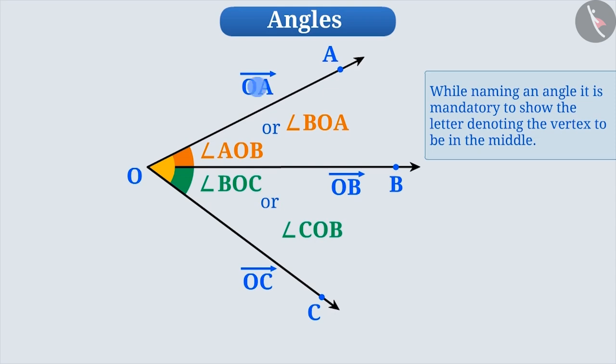Now, can you say what name will be given to the angle formed between rays OA and OC? Come on, give it a shot. Perfect! Its name would be angle AOC or angle COA.